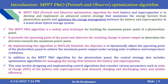Introduction about the MPPT P&O optimization algorithm. This algorithm can be applied for both battery and supercapacitors to develop and implement advanced control strategies that maximize the energy harvest from PV panels and optimize energy management between battery and supercapacitors in stand-alone hybrid storage systems. The MPPT P&O optimization algorithm is widely used for tracking the maximum power point of a photovoltaic panel. P&O stands for Perturb and Observe — it perturbs the operating point of the panel and observes the resulting change in power output to determine the direction towards the maximum power point.